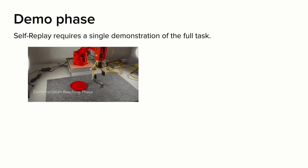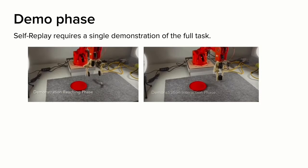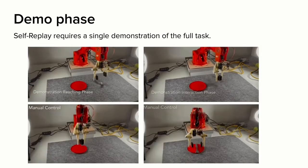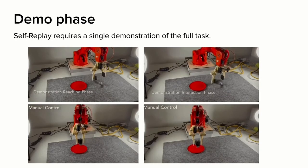The human operator provides a single demonstration. For each stage, they move the end effector to the bottleneck pose, arbitrarily selected by the operator. Then, they move the end effector to manipulate the object at hand, providing a demonstration for the interaction phase. In this case, grasping the fork. This two-step procedure is repeated for each stage until the task is solved.